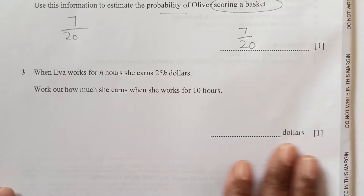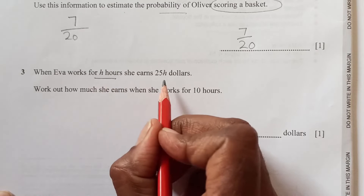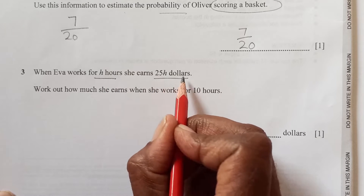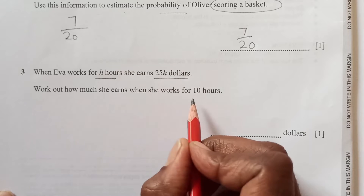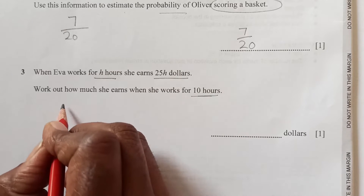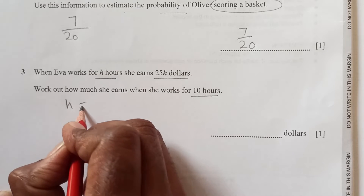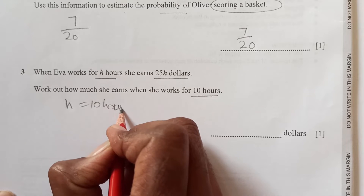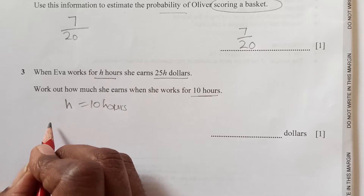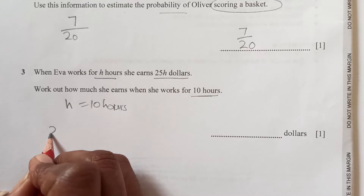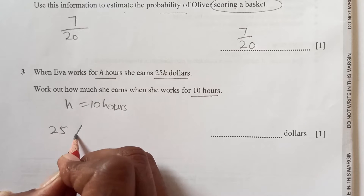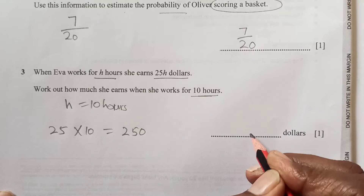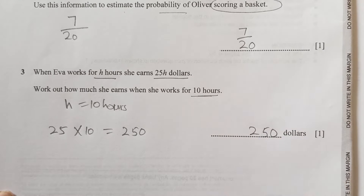Number 3. When Eva works for H hours, she earns 20H dollars. Work out how much she earns when she works for 10 hours. So H here is 10 hours. If she works for H hours she earns 20H, so for 10 hours she is going to earn 20 times 10. That is 250 dollars.